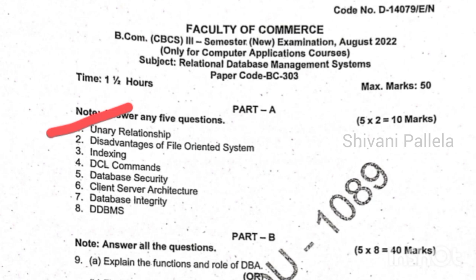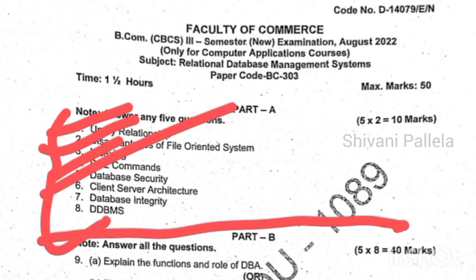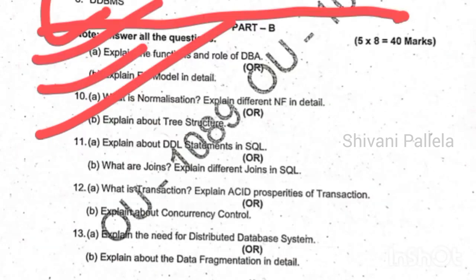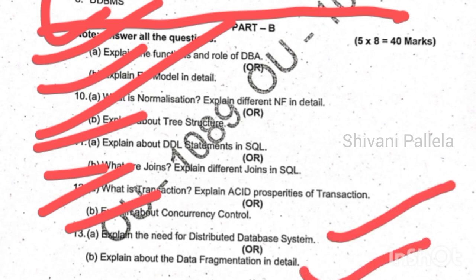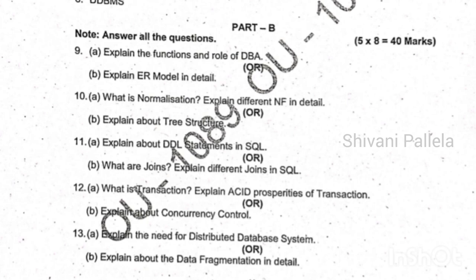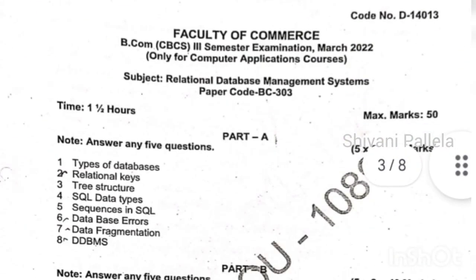Now the 2022 question paper. What they have asked includes unary relationship, disadvantages of file-oriented systems, and DCL commands. For the short questions you don't need to concentrate much — focus on Part B, the long questions: functions of DBA, ER model, and normalization. In the third unit they asked DDL statements in SQL and joins, and in transactions: ACID properties and concurrency control. In the fifth unit, distributed database management system and data fragmentation were asked — data fragmentation is a rare question but sometimes appears.